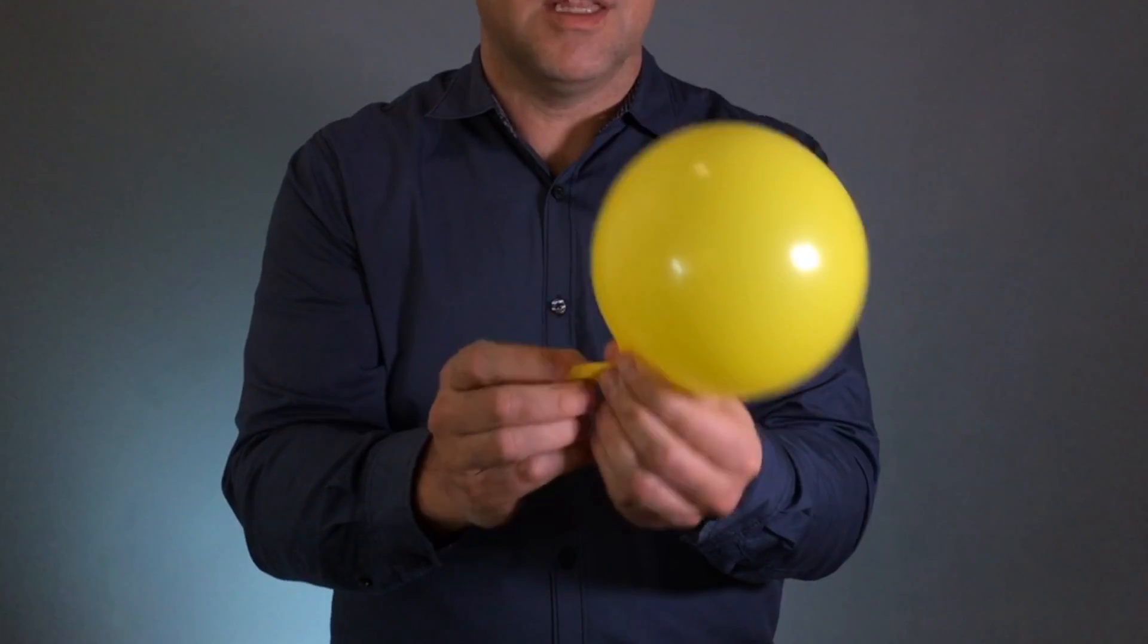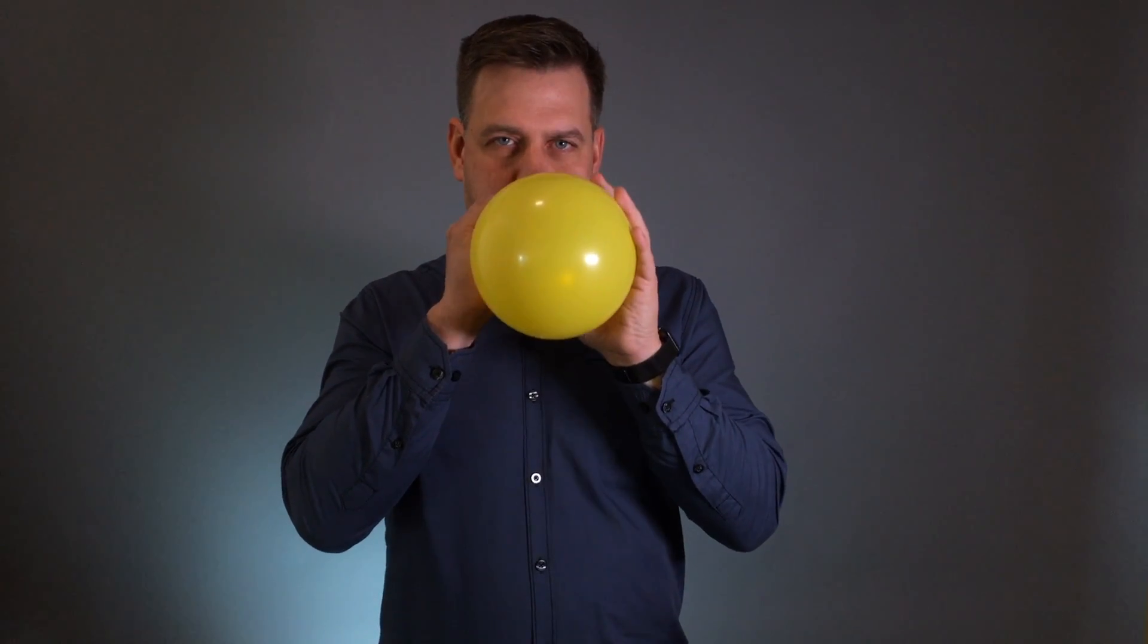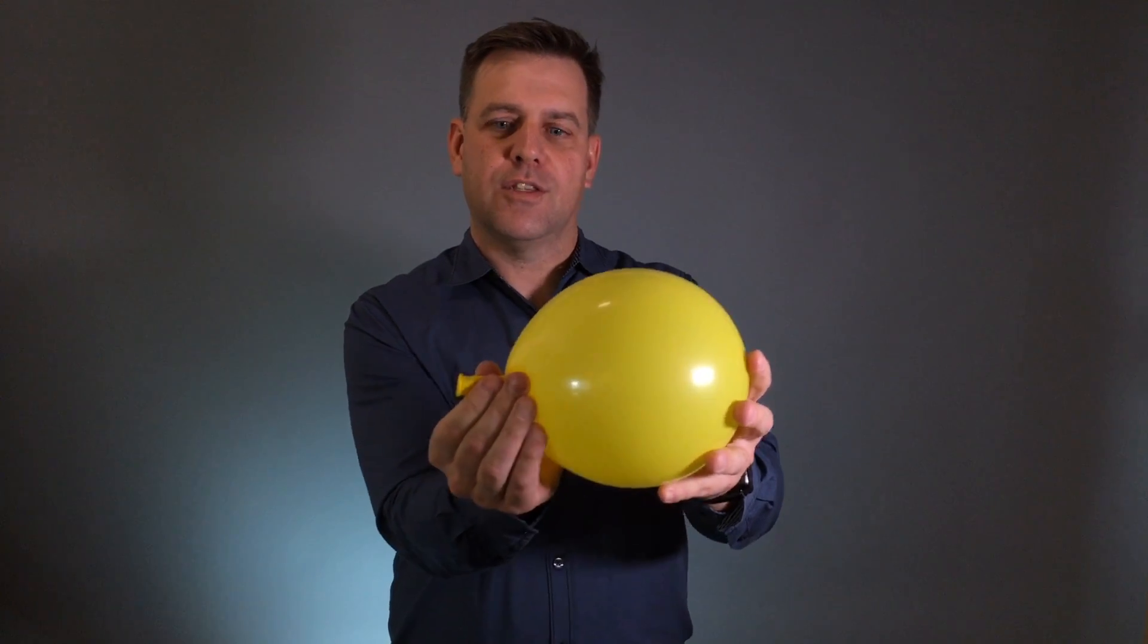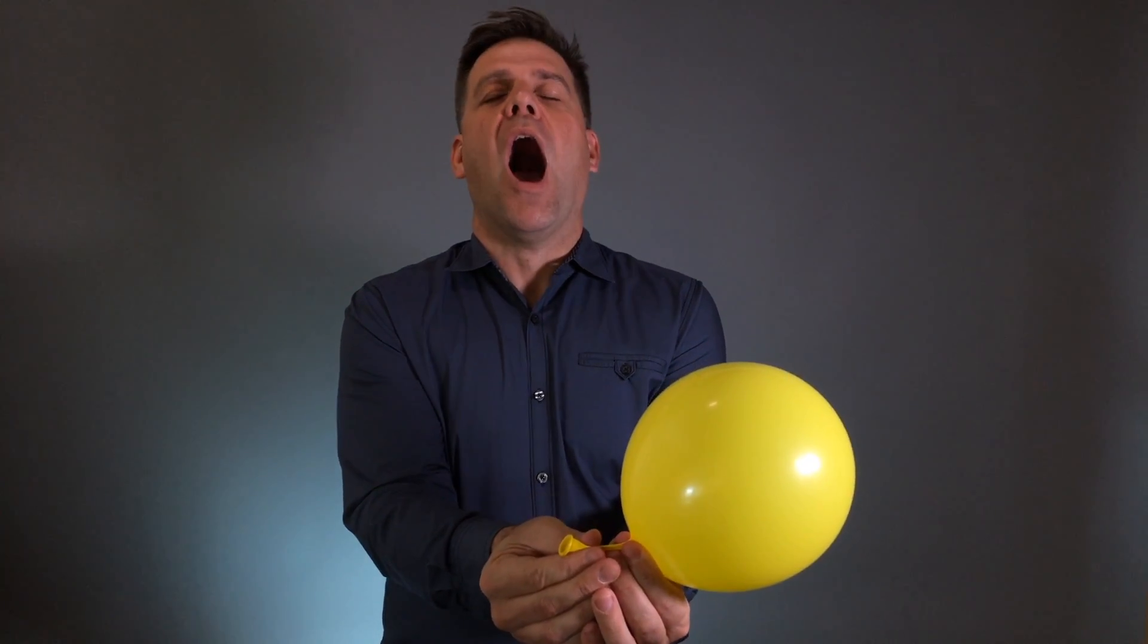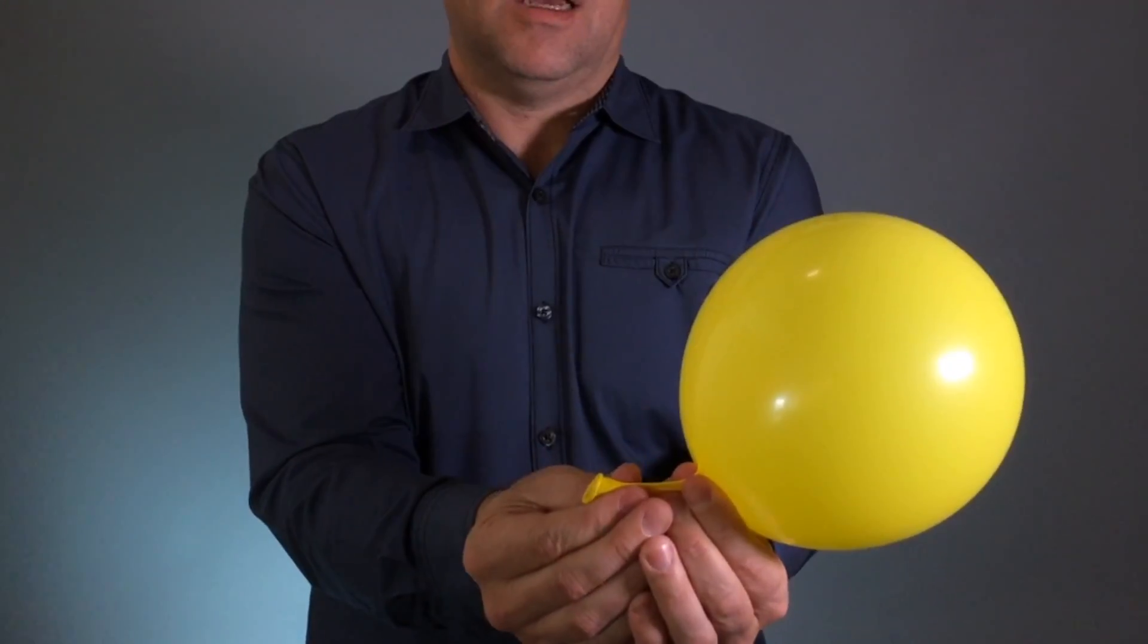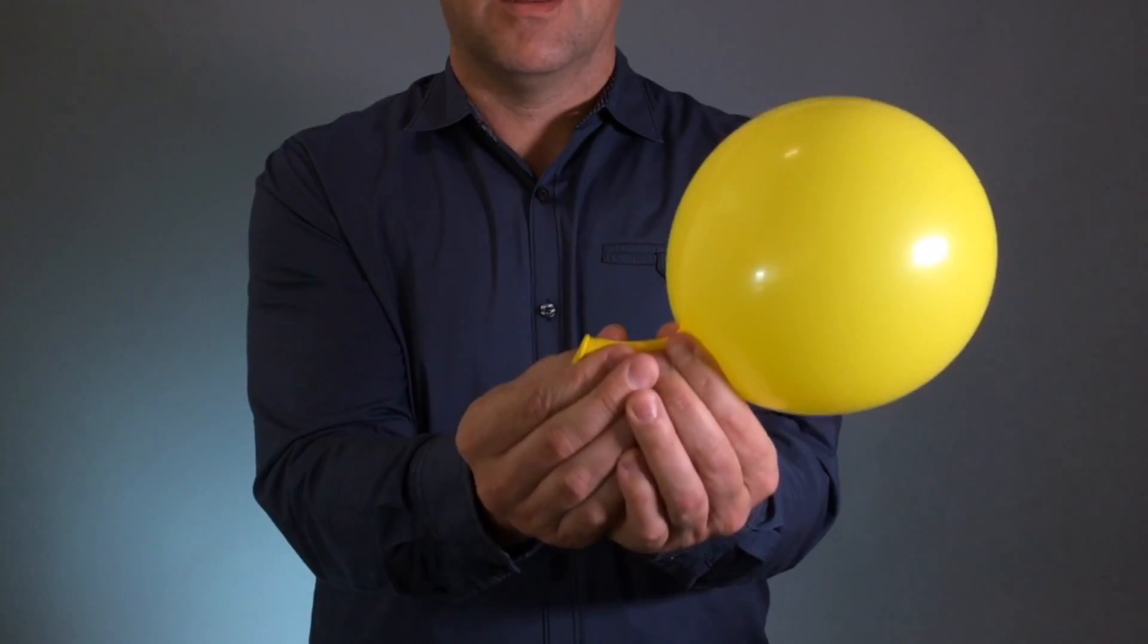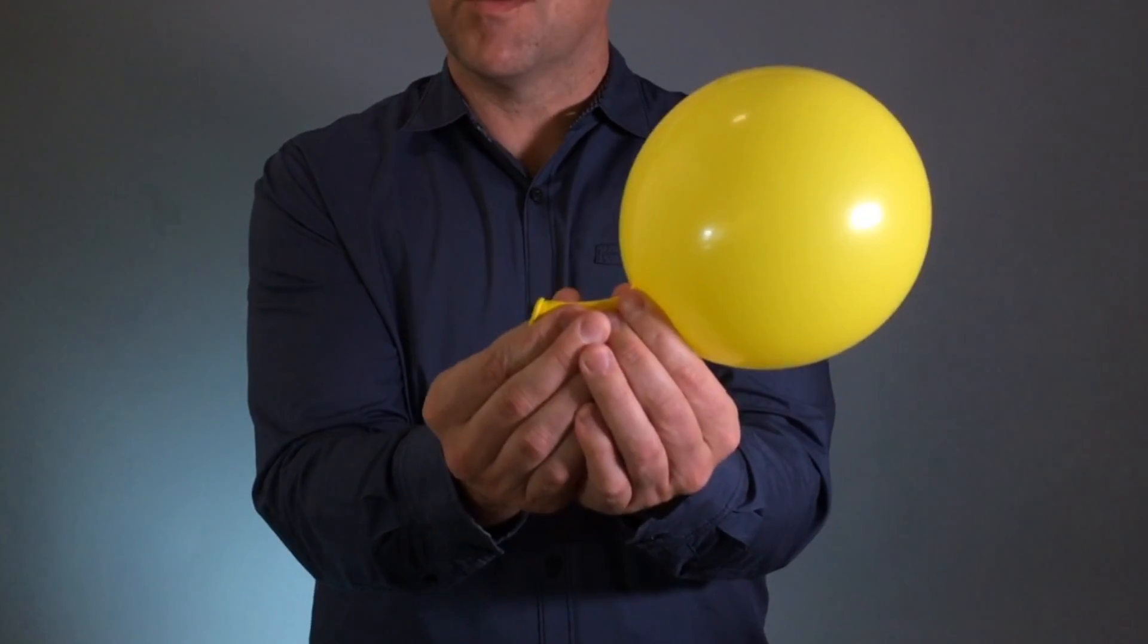When the pressure builds up in the balloon, so when we actually put a little bit more pressure in here, the Eustachian tube during a yawn, so a big yawn, little muscles tensor tympani and tensor veli palatini will actually open up the Eustachian tube and release some of the pressure.